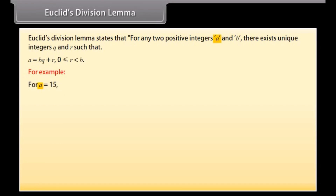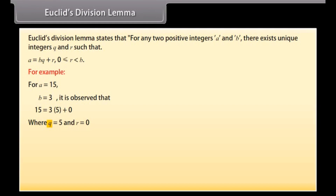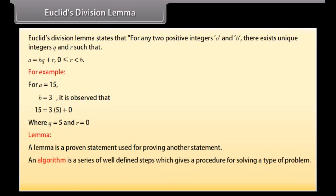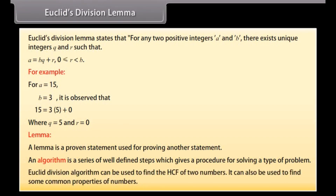For example, A is equal to 15, B is equal to 3. It is observed that 15 is equal to 3 into 5 plus 0, where Q is equal to 5 and R is equal to 0. A lemma is a proven statement used for proving another statement. An algorithm is a series of well-defined steps which gives a procedure for solving a type of problem. Euclid's division algorithm can be used to find the HCF of two numbers, and also to find some common properties of numbers.